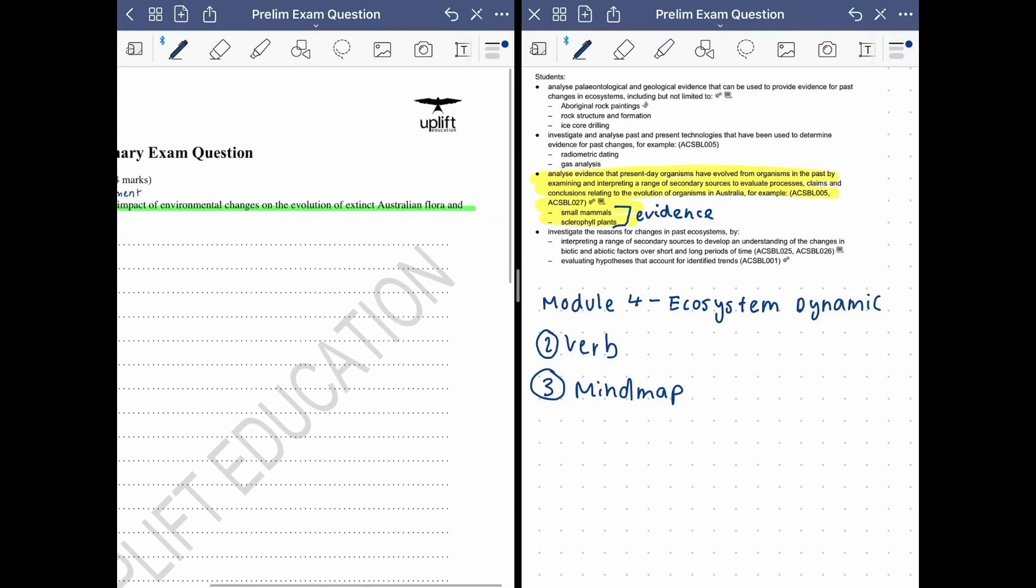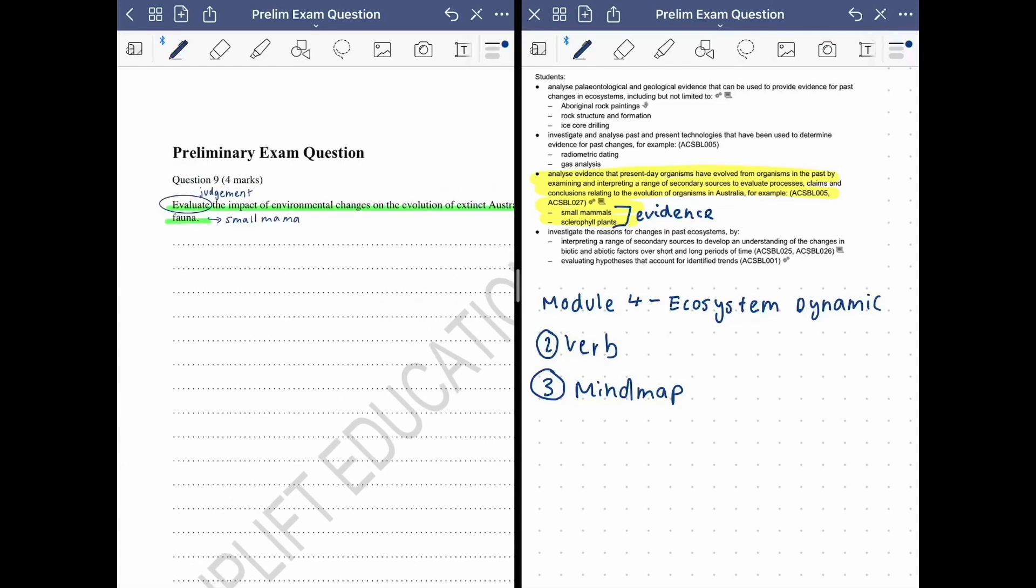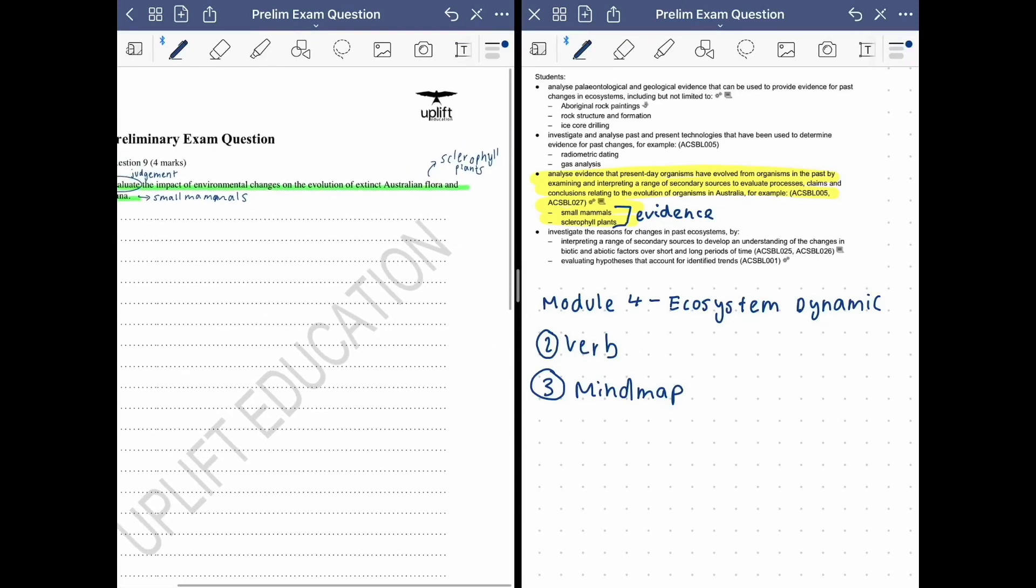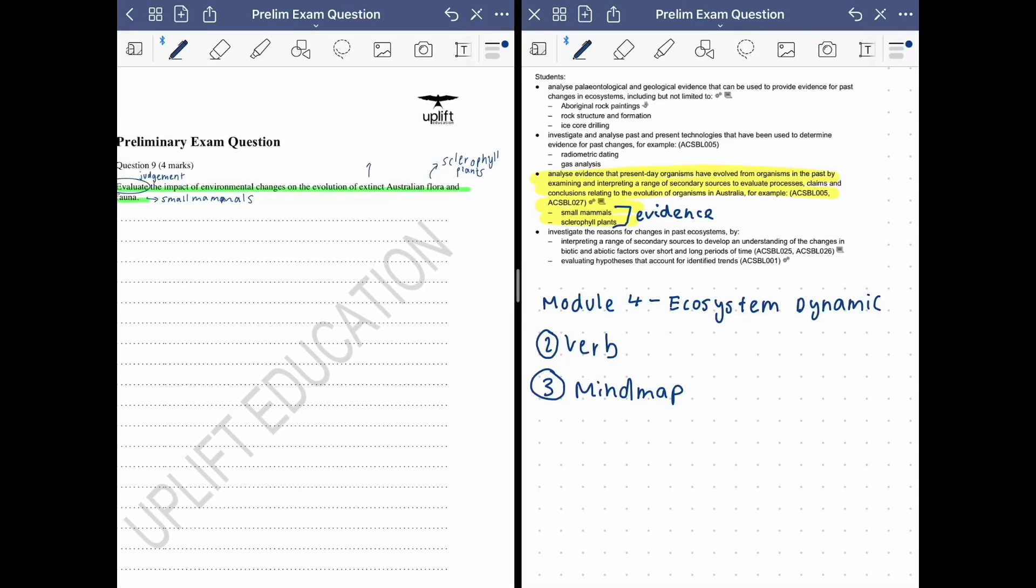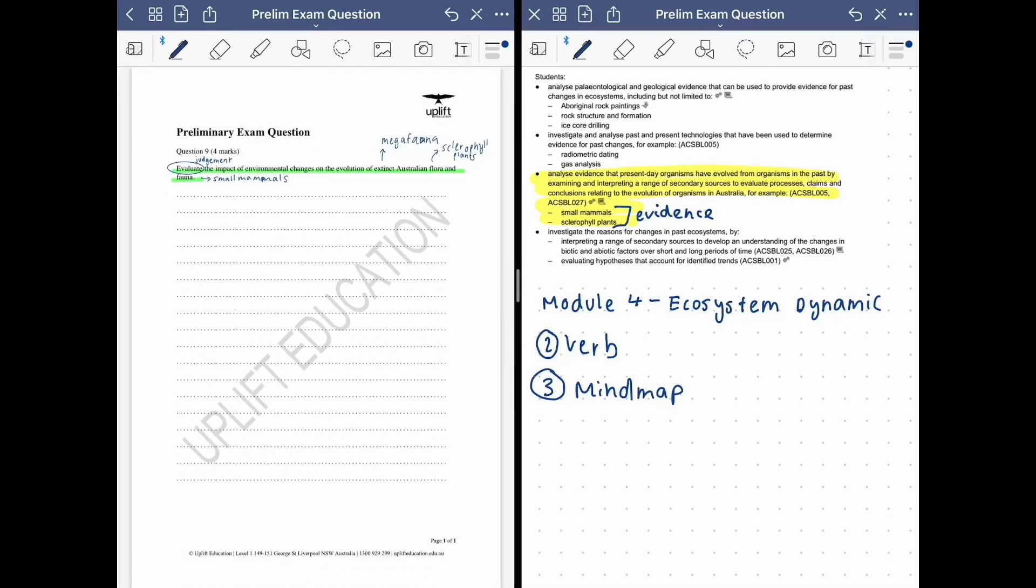So our flora example would be sclerophyll plants and then our fauna example, so our animals, these small mammals and plants, they both evolved from the extinct species of mega fauna. Now I know that I need to include these three key things into my response.